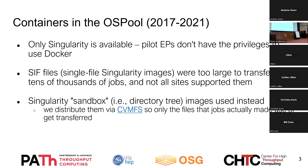Singularity has two kinds of image formats: there's a SIF file, which is a single file, and a sandbox, which is a directory tree. Back in 2017, SIF files were just too large to transfer for tens of thousands of jobs, so they weren't really an option. Also, there were many sites that didn't support running SIF files because that also required special privileges. So instead, we used the directory tree format and distributed them through CVMFS, which is essentially a shared file system for DHTC. The nice thing about CVMFS is that only the files in the container that the jobs actually use got transferred, which saved a ton of network.